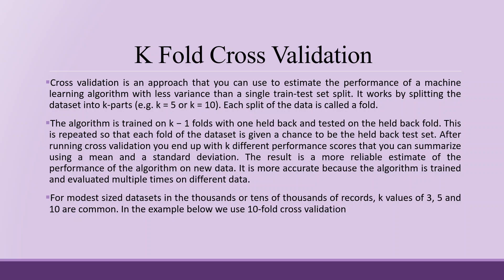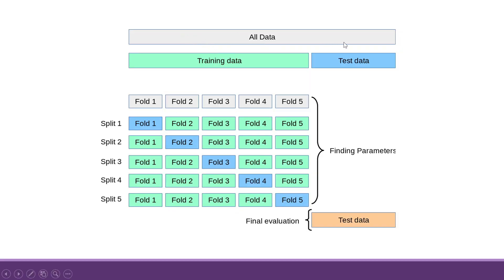This is repeated so each fold gets a chance to be the test set. After running cross validation, you end up with K different performance scores summarized using mean and standard deviation. The result is a more reliable estimate of algorithm performance on new data, as the algorithm is trained and evaluated multiple times on different data. For modest-sized datasets of thousands of records, K values of 3, 5, and 10 are common. In the diagram, data is folded 10 times (shown as 5 here) — in the first split, the blue portion is test data and green is training data, rotating each split until all folds are evaluated.